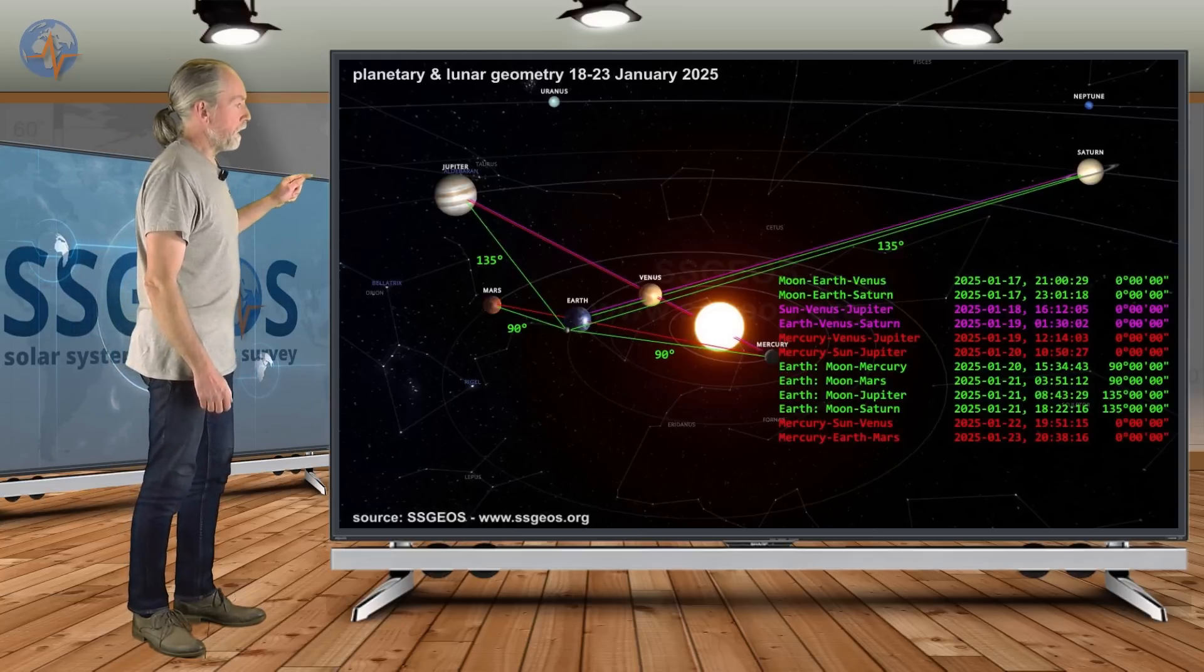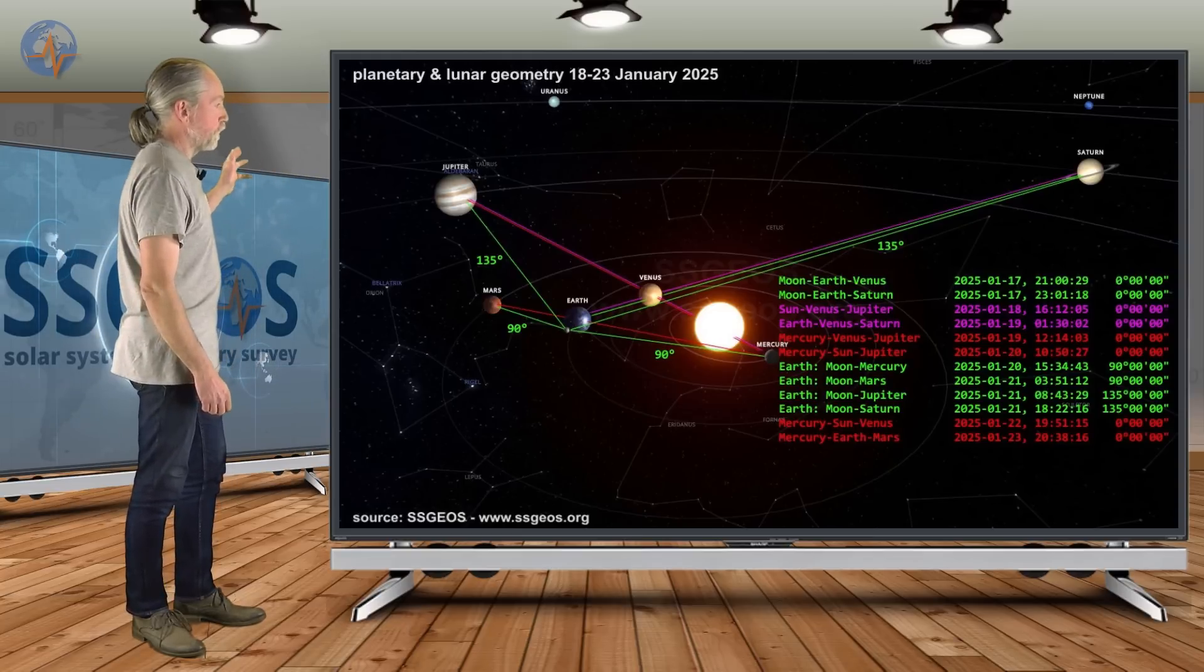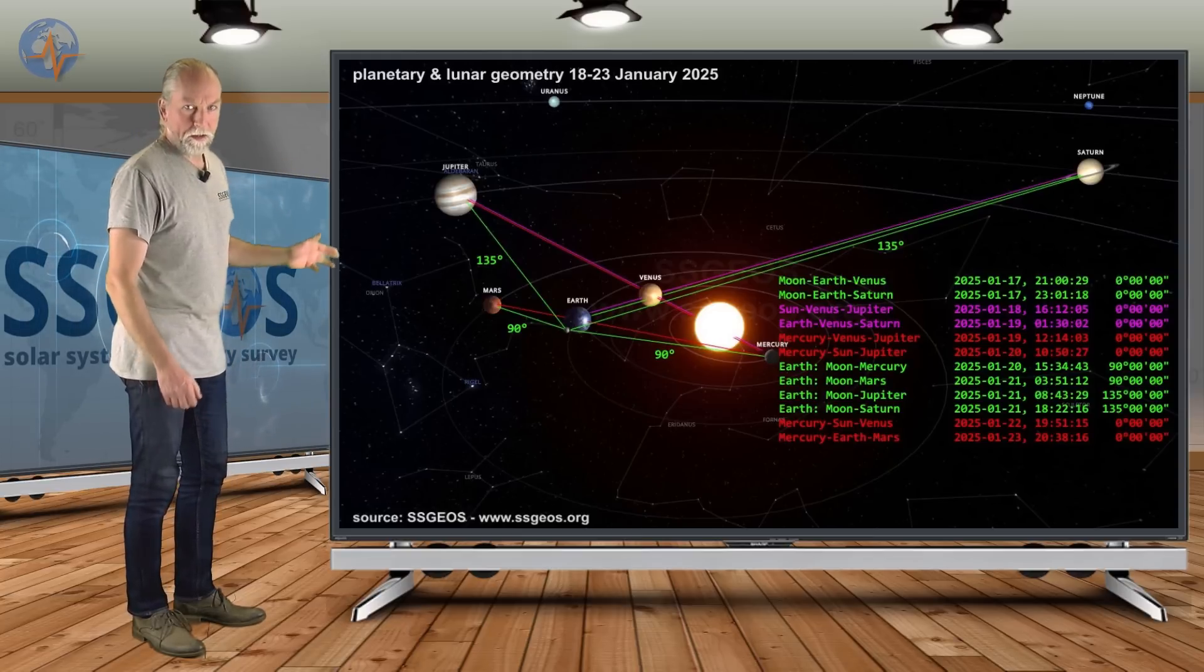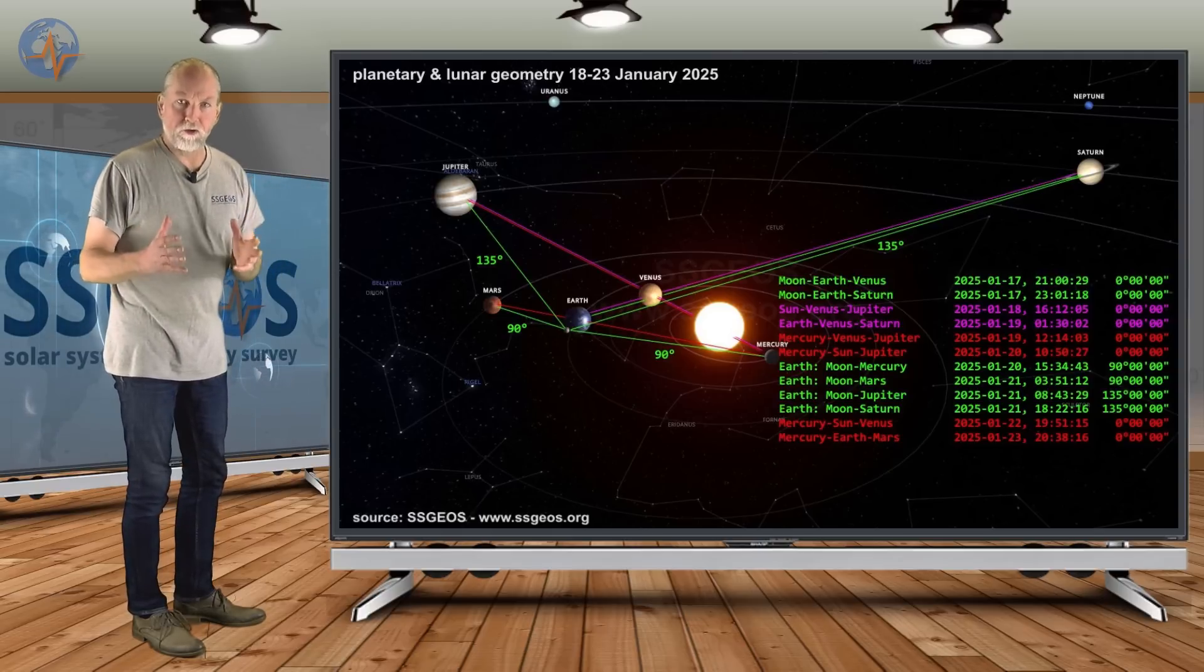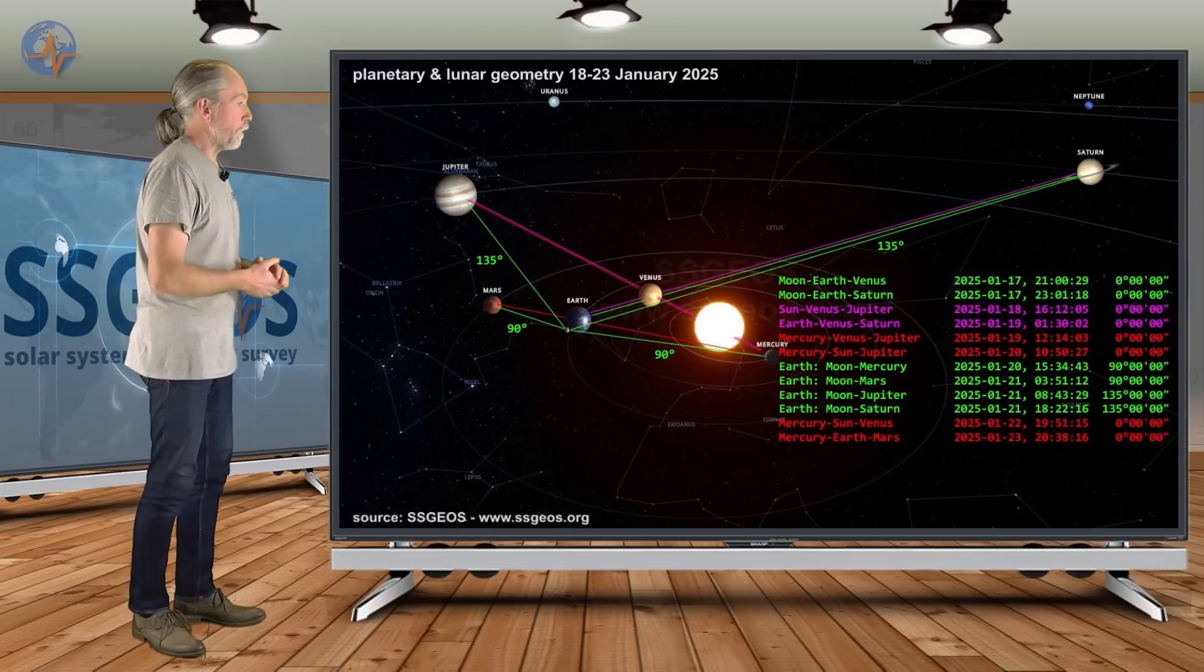this is because Mercury, the Sun, Venus and Jupiter will be in one line. And then we have a near quadruple conjunction and that explains the convergence of planetary conjunctions right there. But we have more coming up.